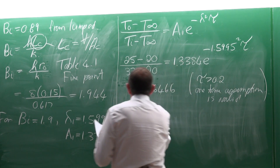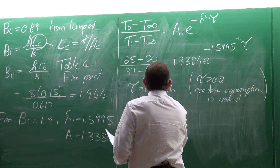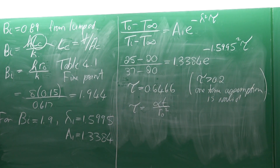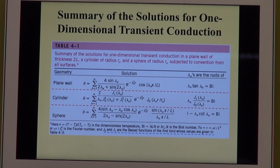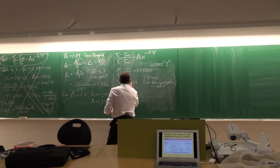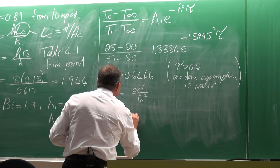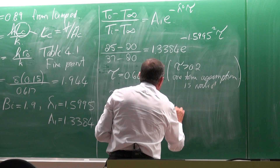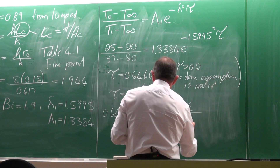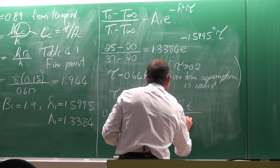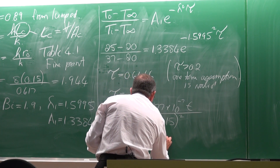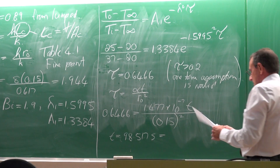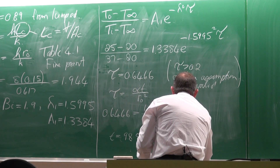The non-dimensionalized time is equal to alpha × t divided by R0² — from the fine print of the table. So 0.64666 = 1.4777 × 10⁻⁷ × t divided by 0.15². This gives t equal to 98,517 seconds. Dividing by 3,600, the actual estimated time of death was 27.37 hours ago.